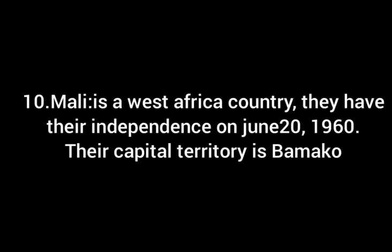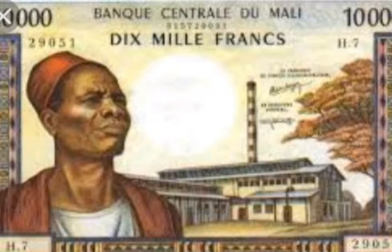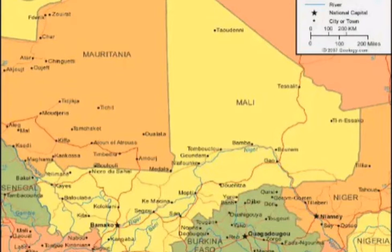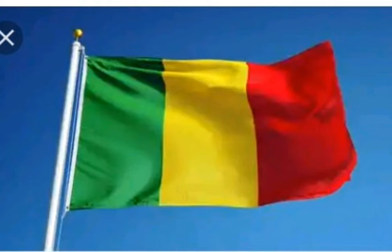Number 10, Mali. Mali is a West African country. Their president is Ibrahim Keïta. This is their currency. They gained their independence on June 20, 1960. This is the Mali map and flag. Their capital territory is Bamako.